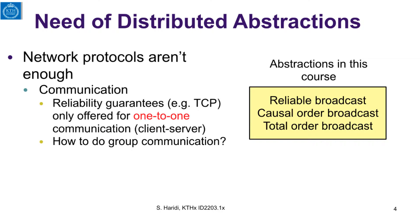So why do we need distributed abstraction? First of all, network protocols aren't enough. Network protocols provide point-to-point communication services, so the reliability guarantees — for example for TCP — are only offered for one-to-one communication. This is typical for a client-server application. But in many applications we are talking about a group of processes, a group of machines. So in this course we are going to cover a number of reliable services that are used for group communication, not only for one-to-one process communication.